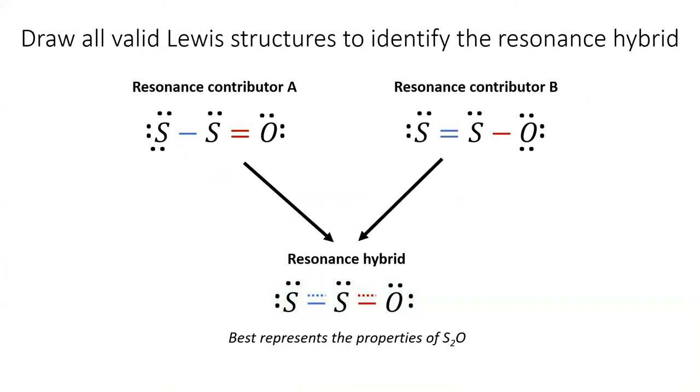In order to determine the resonance hybrid for a molecule, you have to draw all valid Lewis structures for that molecule. Each individual structure will be called a resonance contributor, and the real molecule will behave like a resonance hybrid of its resonance contributors.